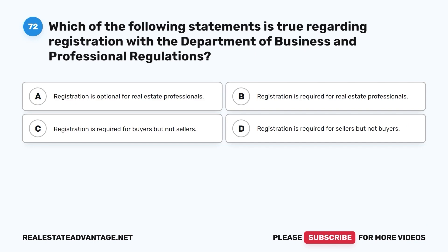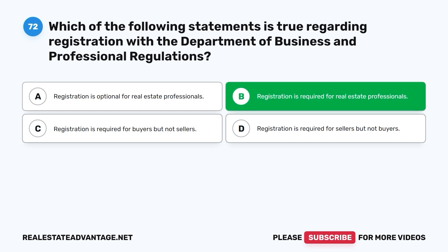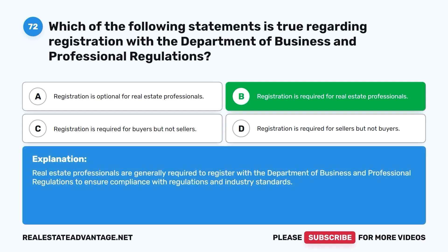Question 72. Which of the following statements is true regarding registration with the Department of Business and Professional Regulations? A. Registration is optional for real estate professionals. B. Registration is required for real estate professionals. C. Registration is required for buyers but not sellers. D. Registration is required for sellers but not buyers. The correct answer is B. Real estate professionals are generally required to register with the Department of Business and Professional Regulations to ensure compliance with regulations and industry standards.